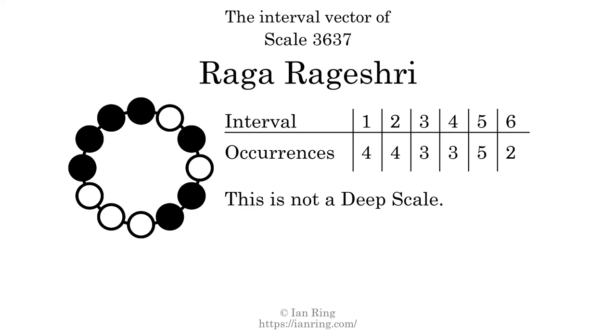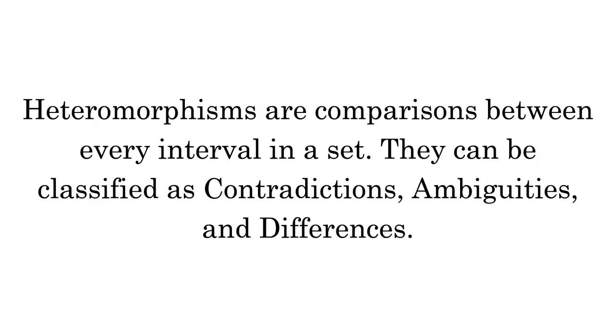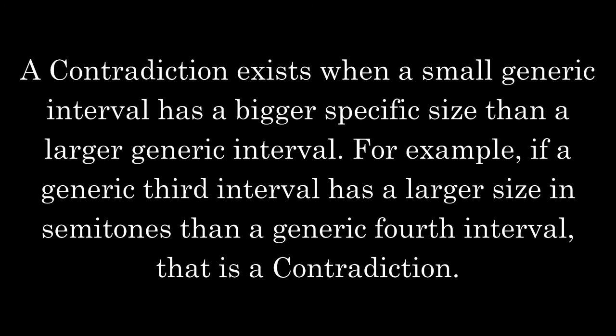Each interval does not appear in this scale a unique number of times, so this is not a deep scale. Heteromorphisms are comparisons between every interval in a set. They can be classified as contradictions, ambiguities, and differences. A contradiction exists when a small generic interval has a bigger specific size than a larger generic interval. For example, if a generic third interval has a larger size in semitones than a generic fourth interval, that is a contradiction.